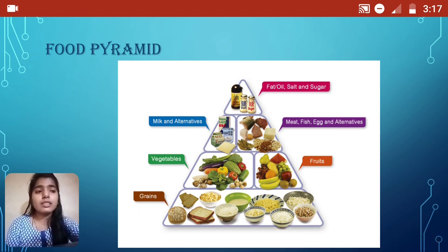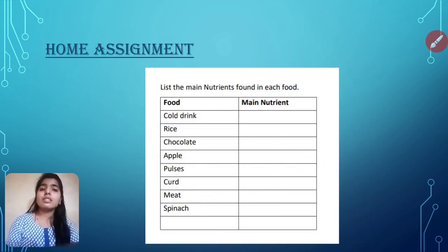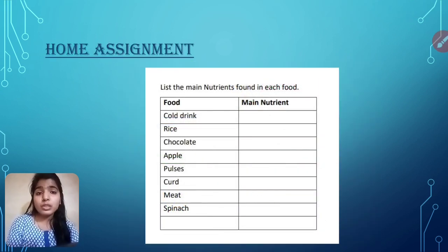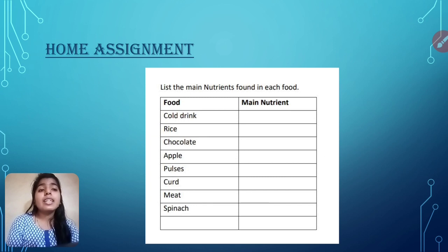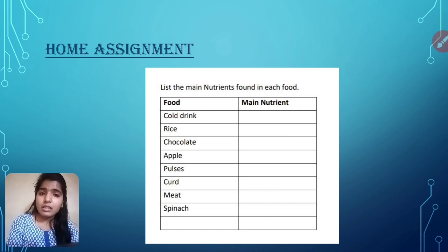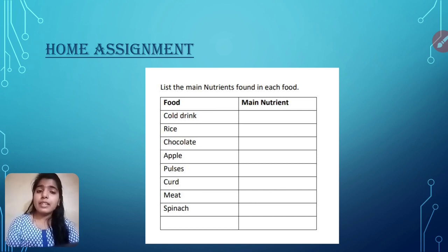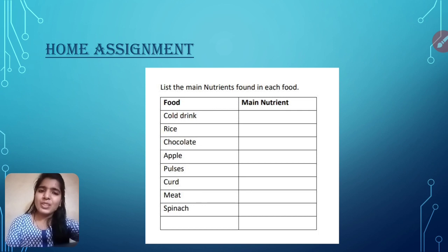Now there is a home assignment for you. You have to do this strictly and follow it. See the question: list the main nutrients found in each food. You have to write down the main nutrient that each food contains. I hope you all understood this topic very well. For better understanding, you can use the application Extra Marks. Thank you and have a good day.